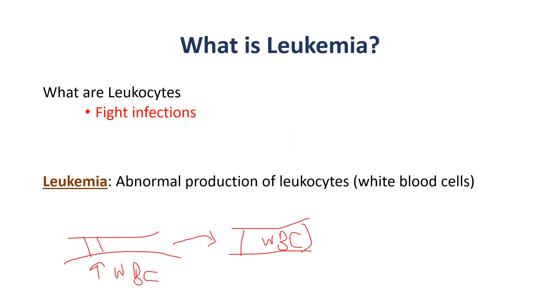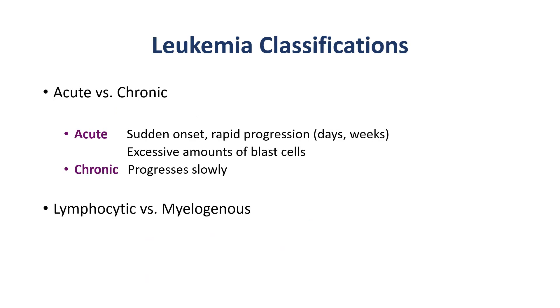In this presentation, we'll talk about leukemia, covering pathophysiology, assessments, and nursing interventions. Leukocytes are white blood cells that help fight infections and are derived from stem cells of the red bone marrow. Leukemia is basically abnormal production of white blood cells; these abnormal cells cannot fight infections and also reduce the ability of the bone marrow to produce red blood cells and platelets.